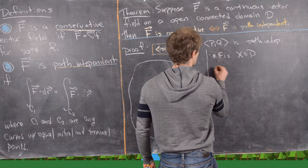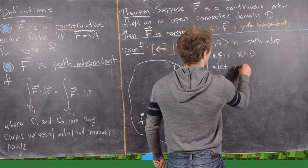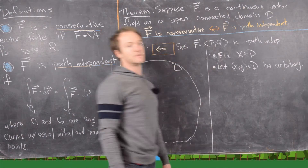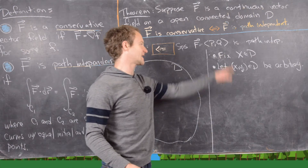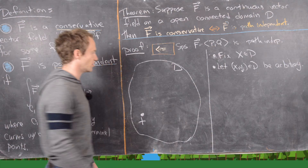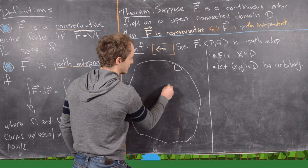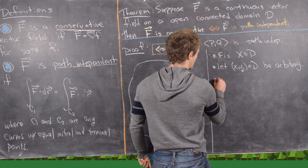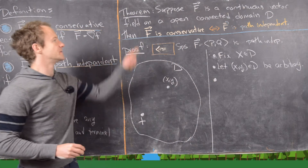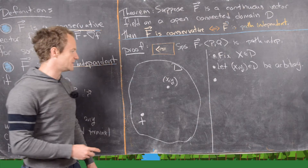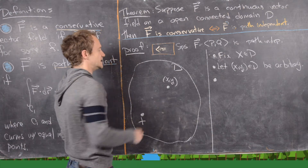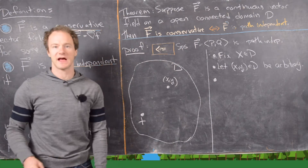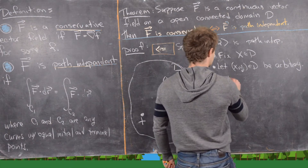Next, let (x, y) in D be an arbitrary variable point. Since D is an open domain, any point inside D has a disk around it completely contained in D. We find a disk centered at (x, y) that is contained in D, which we can do because D is open. This disk is drawn in red around (x, y).